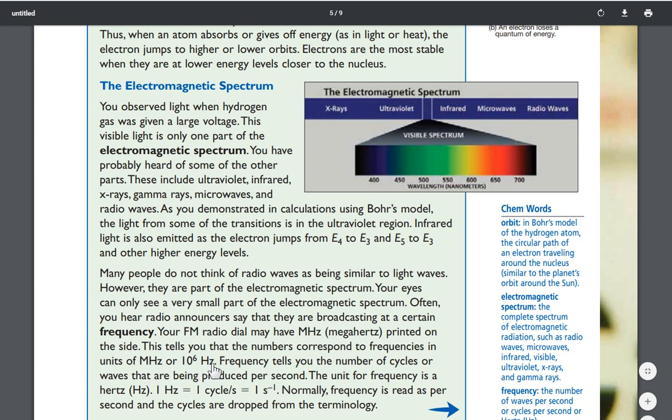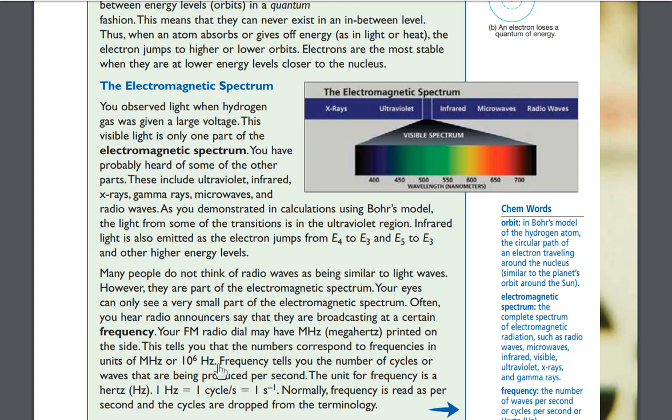These are the same. Megahertz means 10 to the sixth power hertz. And if you remember from our discussion of hertz, 1 hertz equals 1 wave per second. So what would 10 to the sixth power hertz be? How many waves per second? Well, 10 to the sixth power is a million. So this is a million waves every second. Frequency tells you the number of cycles or waves that are being produced per second. The unit for frequency is a hertz. One hertz equals one cycle per second, which equals one second to the negative first power. Normally, frequency is read as per second. And the cycles are dropped from the terminology.